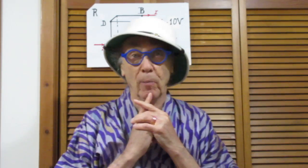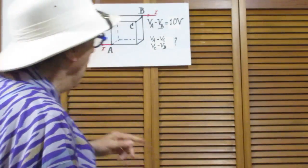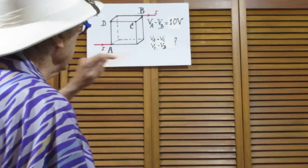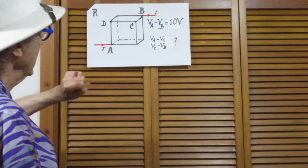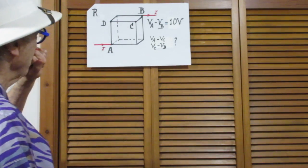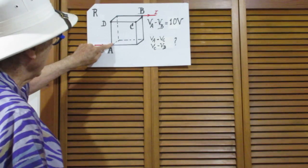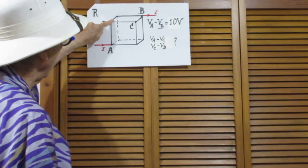Nice problem. I think most high school people should be able to do this problem. I have a cube here. A cube has 12 sides, and each side has a resistance capital R ohms. So this side is capital R ohms, this is capital R ohms, this is capital R. All sides capital R ohms.